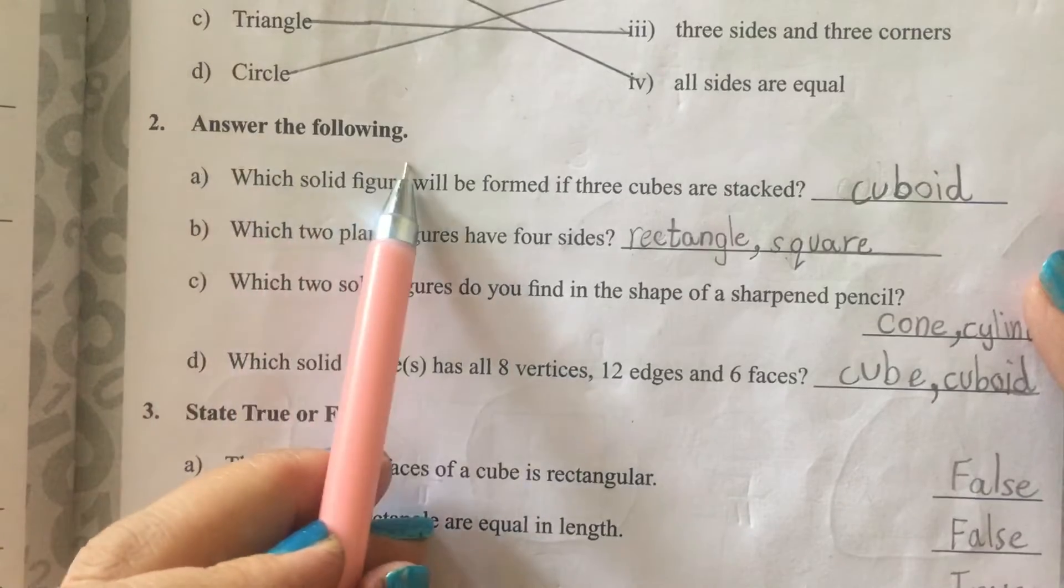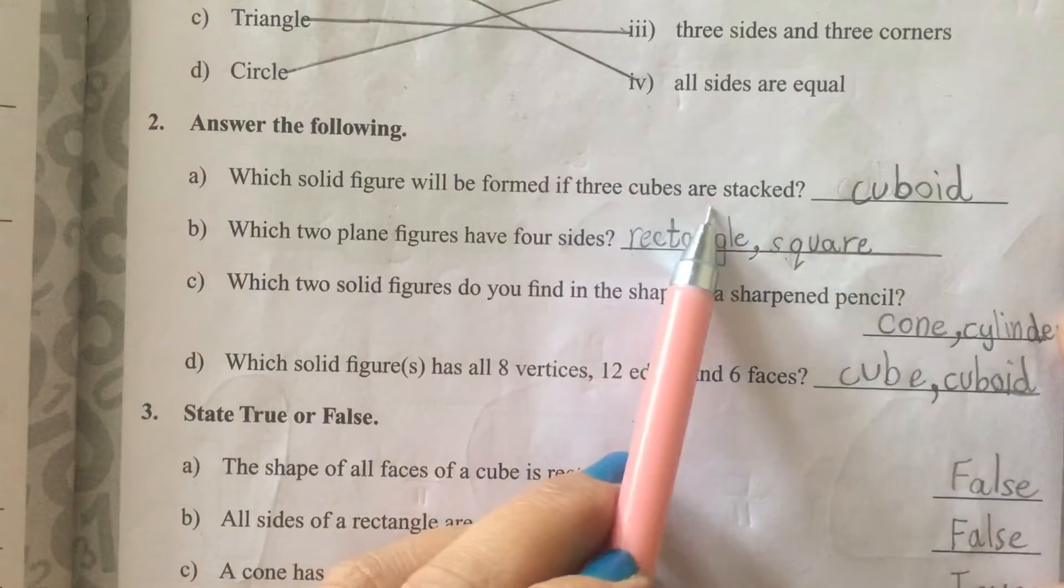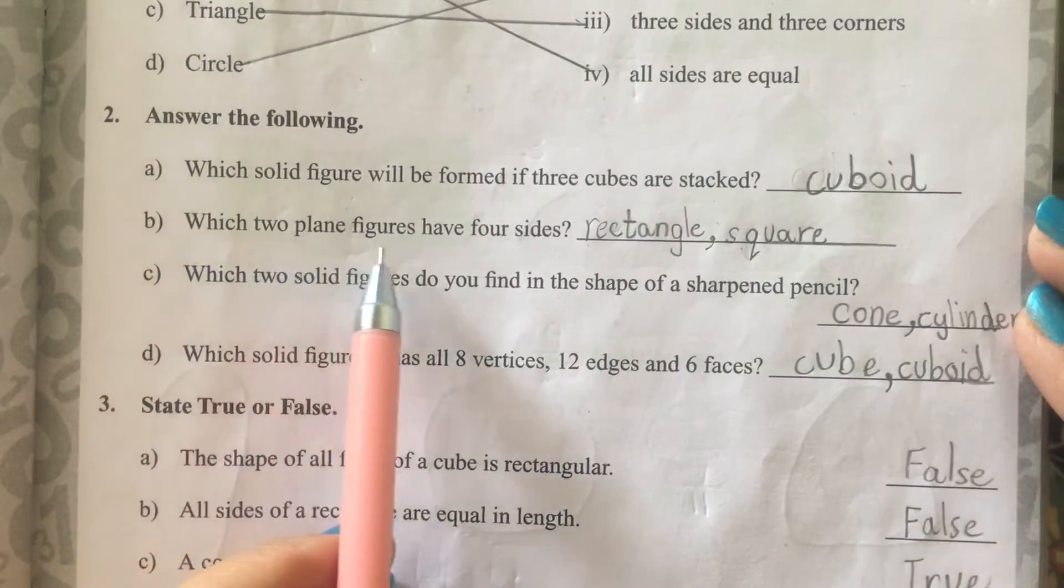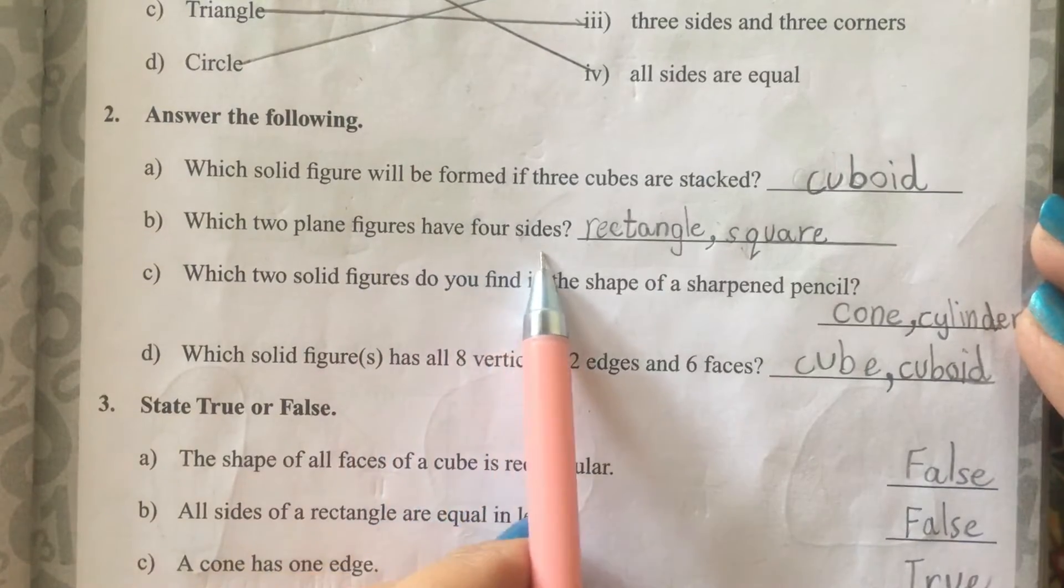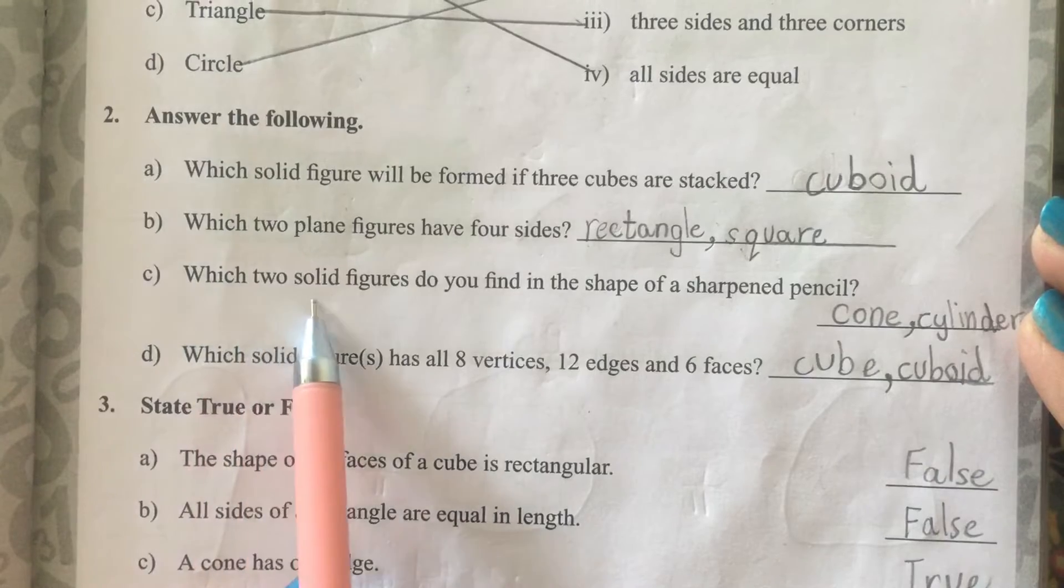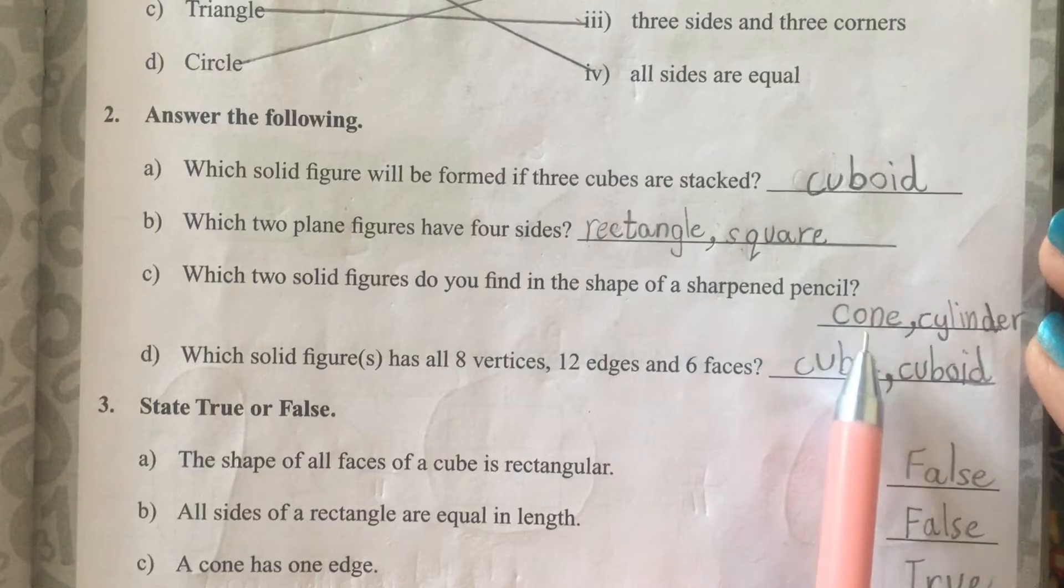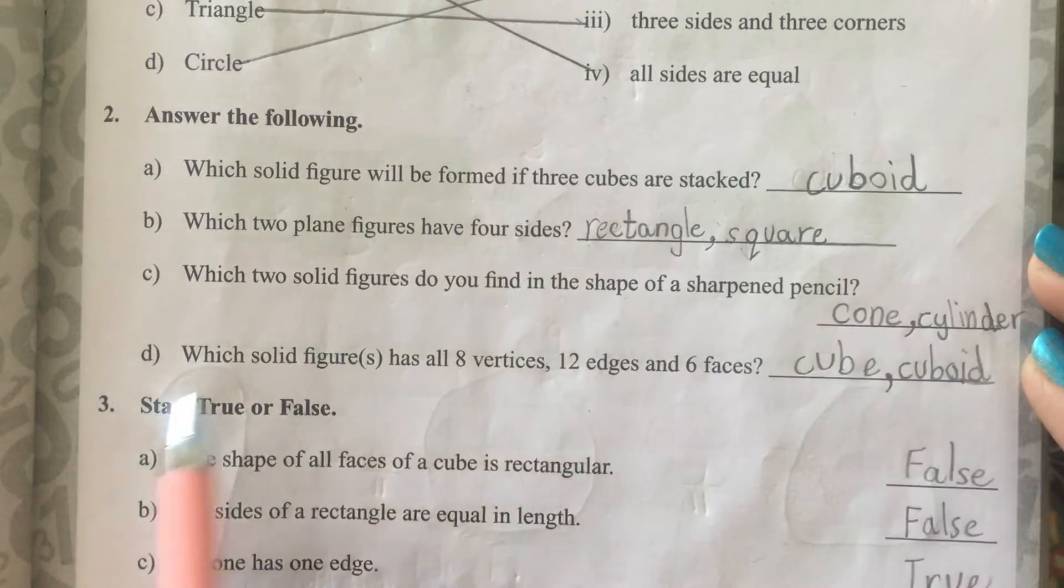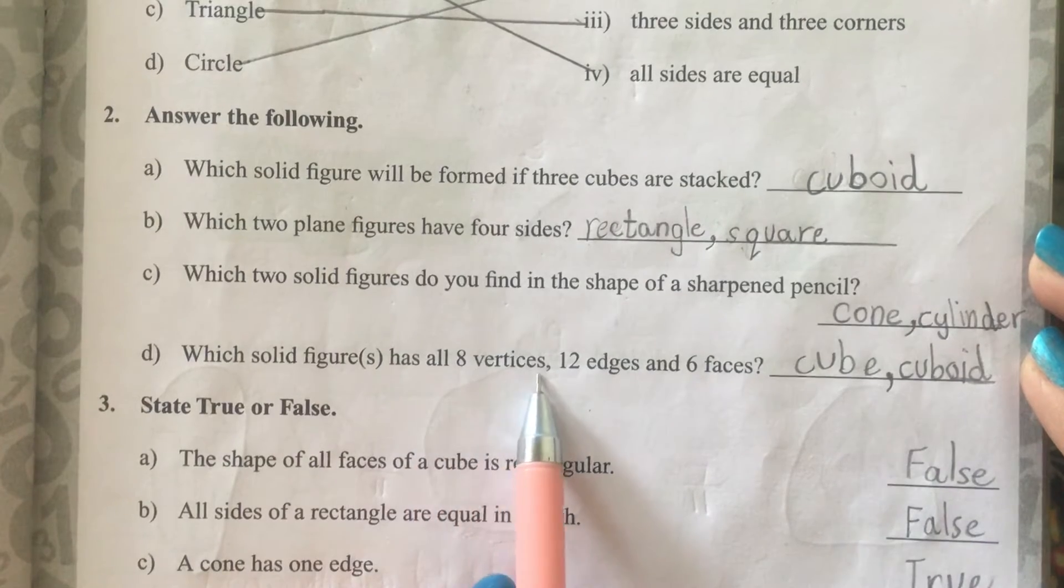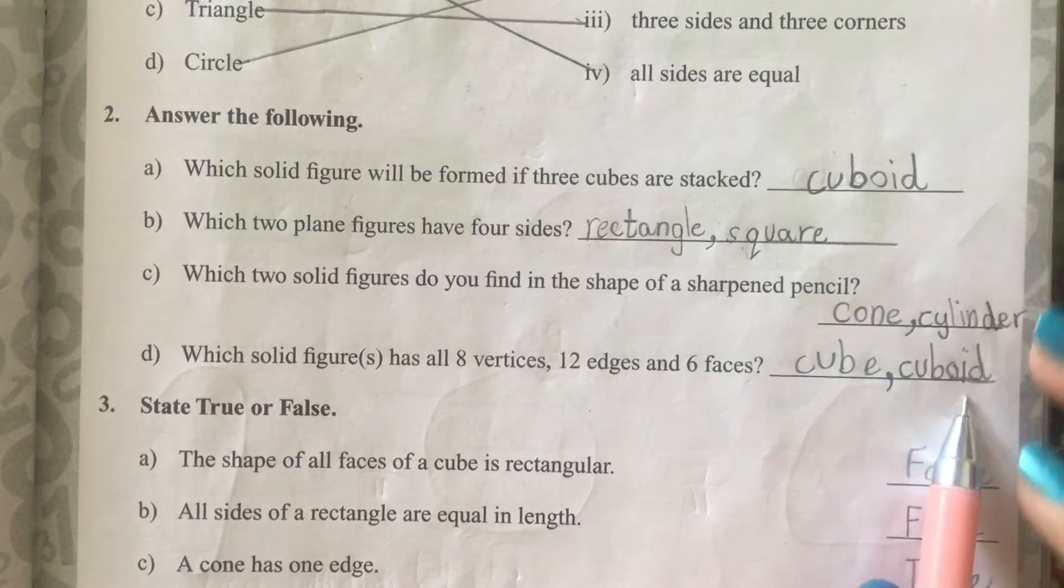Answer the following. A. Which solid figure will be formed if three cubes are stacked? Cuboid. B. Which two plane figures have four sides? Rectangle and square. C. Which two solid figures do you find in the shape of a sharpened pencil? Cone and cylinder. D. Which solid figure has all 8 vertices, 12 edges and 6 faces? Cube and cuboid.